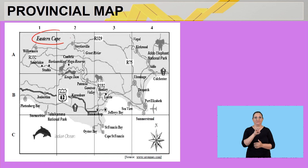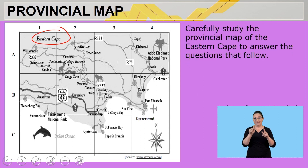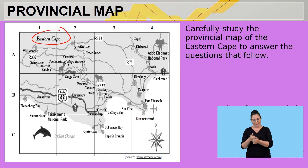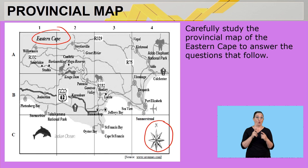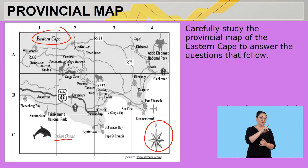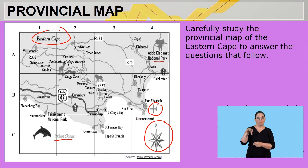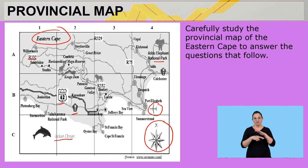Welcome back. After that short advert break, let us now look at a provincial map. Looking at the map, I can see the Eastern Cape — this is the province of the Eastern Cape. The instruction says to carefully study the provincial map of the Eastern Cape to answer the questions that follow. Getting familiar with the map: north is facing upwards, there is the Indian Ocean, an airport symbol, some national parks, national routes, and regional roads.